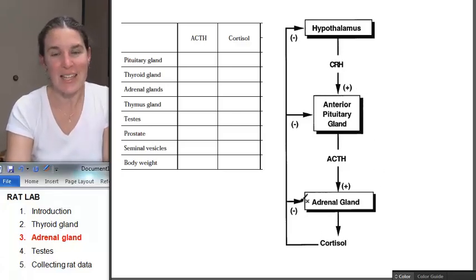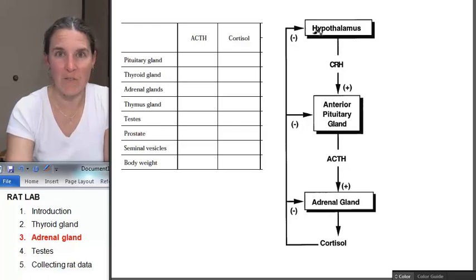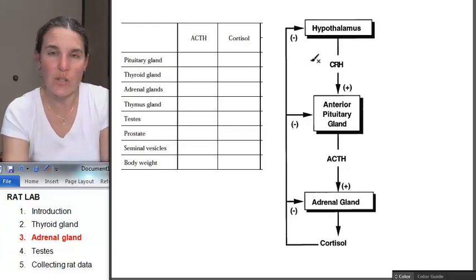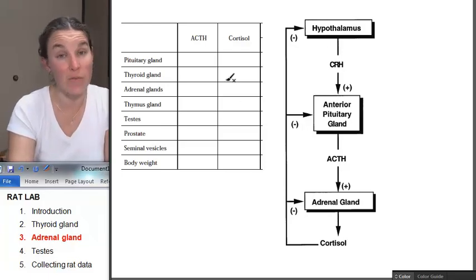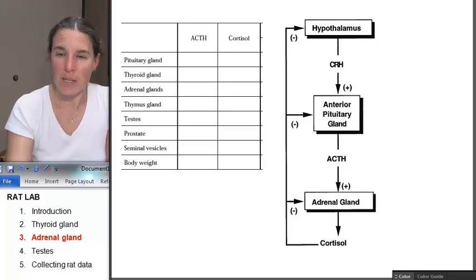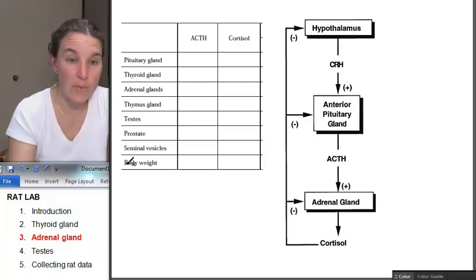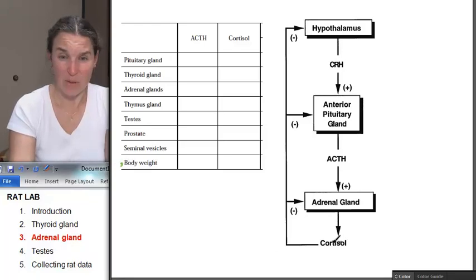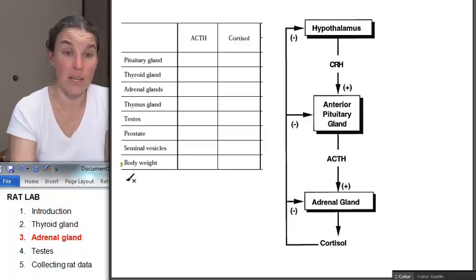Again, we see the exact same negative feedback mechanisms. So we're going to use those mechanisms to figure out how to fill in this chart. I'm going to tell you that I just told you that we're going to affect body weight. You agree with that because I just told you cortisol can cause you to lose weight. All of our reproductive organs aren't going to be affected by cortisol.